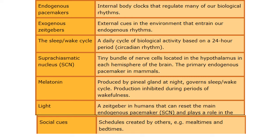The sleep-wake cycle is the daily cycle of biological activity based on a 24-hour period, also known as a circadian rhythm. When we sleep and when we engage in wakefulness - usually at different times of the day our blood pressures go up and down, our hunger is suppressed, and melatonin is either inhibited or released at particular times. All of that is to do with our sleep-wake cycle.